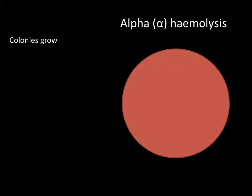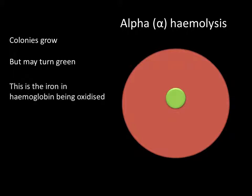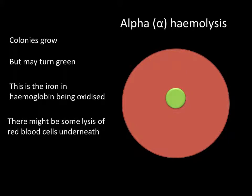The first type is called alpha hemolysis. Here on the right-hand side we have our blood agar plate - we take our swab, streak it onto the surface, and colonies grow. The colony itself may turn a kind of greeny colour, basically due to the bacteria oxidising the iron atom found within hemoglobin, so they take on some of that colouration from the blood underneath. Sometimes with alpha hemolysis you'll actually see a very tiny amount of hemolysis - actual destruction of red blood cells growing underneath the colony - though not always.